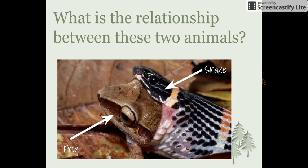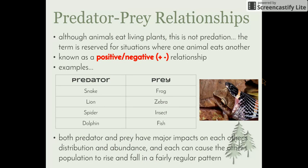When we look at these two animals, what is the relationship? From the dot point, we can understand that one is the predator and one is the prey. In this case, our snake would be classified as our predator and our frog would be our prey, as the snake has hunted, captured, and is now consuming the frog. Animals eating living plants is not technically known as predation — the term is reserved for situations where one animal eats another animal, usually of a different species.